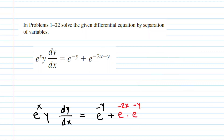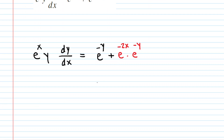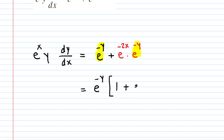So we have rewritten that last term in the equation — we've colored it in red to emphasize what we have done. Now if we look carefully, we can see that e to the negative y is a common factor in each term on the right-hand side. And because it is a common factor, we can factor it out. So let's go ahead and do that: we'll have e to the negative y multiplied by the quantity 1 plus e to the negative 2x.